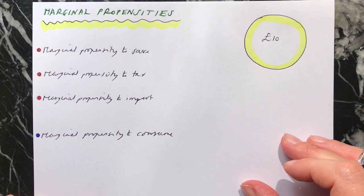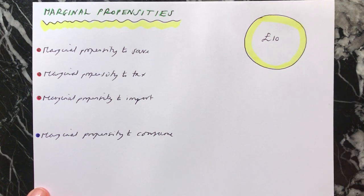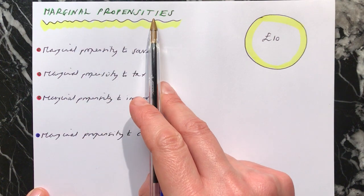Hi everybody, we are building up our information that we need to be able to talk more about the multiplier and about how we calculate what the multiplier is within an economy. And in order to do that, the next thing that we need to do, the next piece of the jigsaw, is to look at marginal propensities.